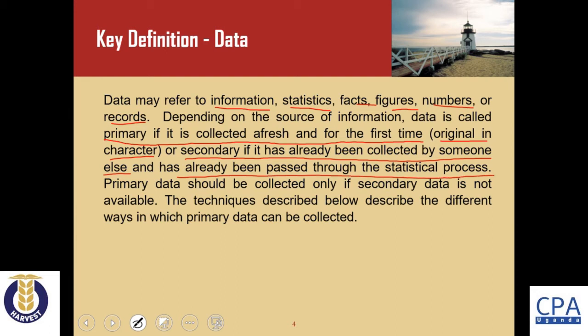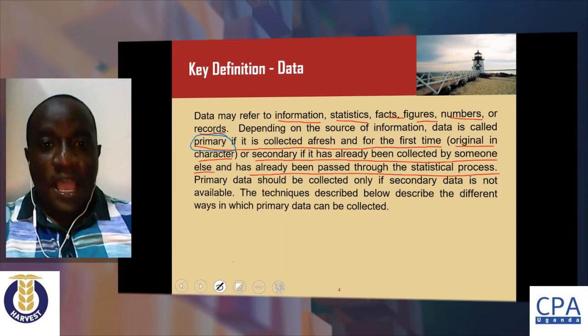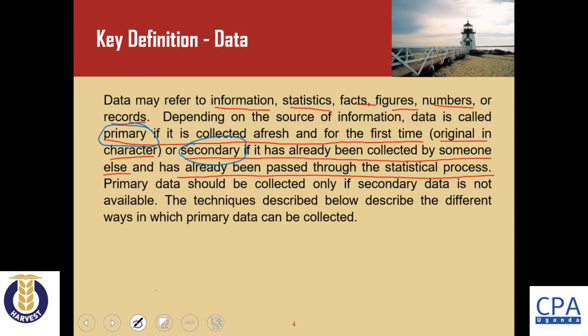To summarize: data can be primary or secondary. It is primary if it is collected afresh and for the very first time. It is secondary if it has already been collected by someone else and has already gone through the statistical process. This is our key definition of data.